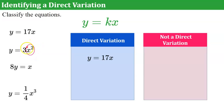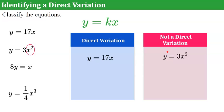Now let's look at our second equation: Y equals 3 times X squared. Because the exponent of X is 2, not 1, this is not a direct variation. Remember, the exponent must be 1, which is invisible in standard equations.